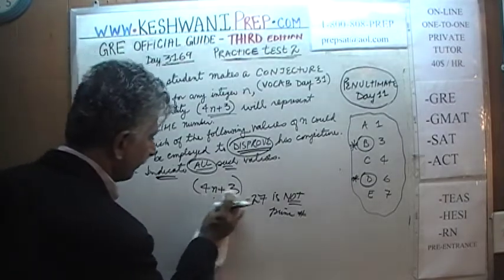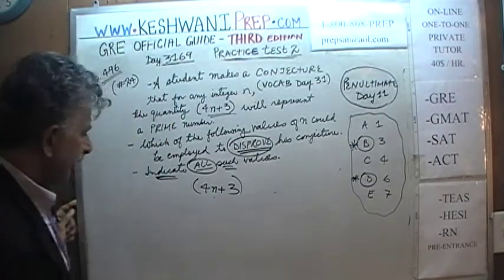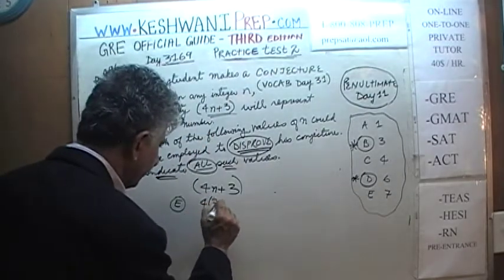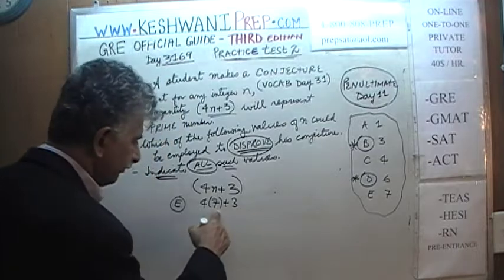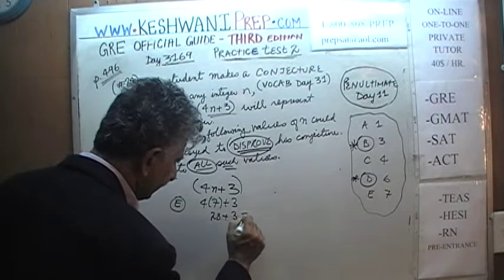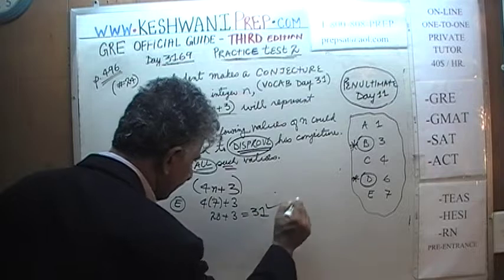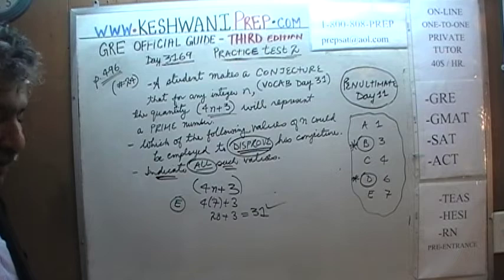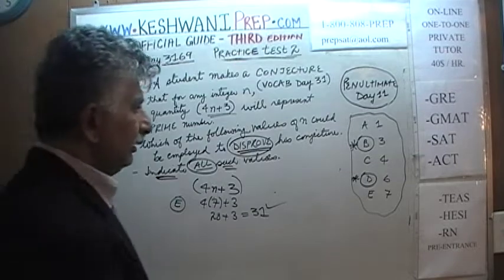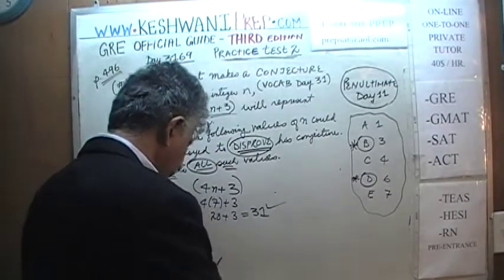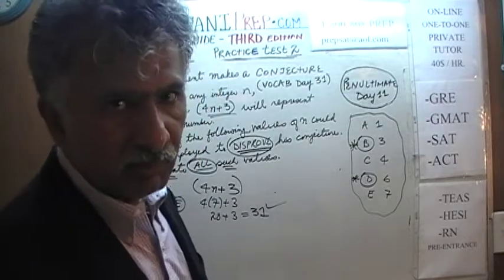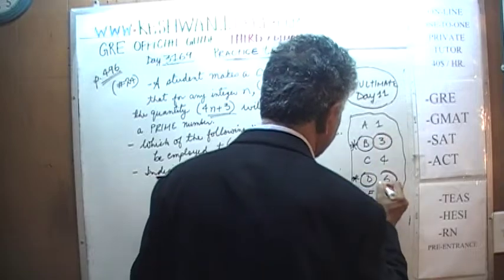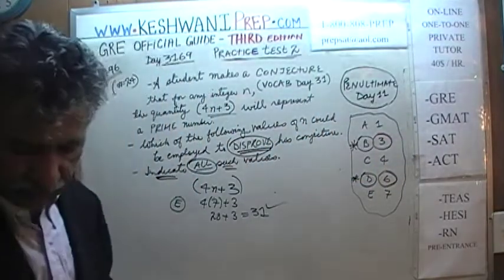For E, n equals 7: 4 times 7 plus 3 is 28 plus 3, which is 31. And 31 is a prime number, so we are unable to disprove it. Among all the answer choices given, there are two values of n that can be used to disprove the conjecture: namely 3 and 6. The correct answer choices are B and D, corresponding to n equals 3 and n equals 6.